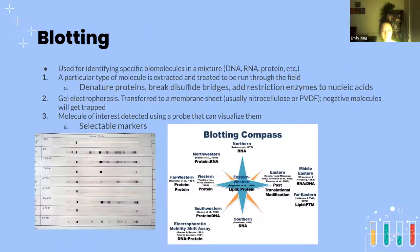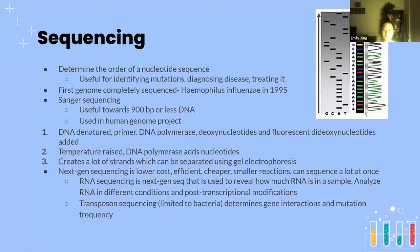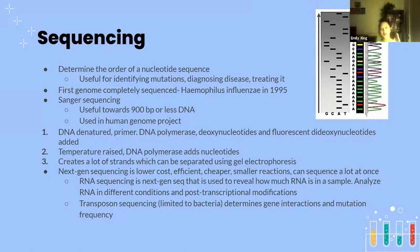In Sanger sequencing, the DNA is denatured, then factors are added — the temperature is raised and DNA polymerase adds complementary nucleotides to the DNA. Denaturing keeps one side of the DNA ladder while the other is removed, and then DNA polymerase adds back that second side. This creates a lot of strands which can be separated again using gel electrophoresis.